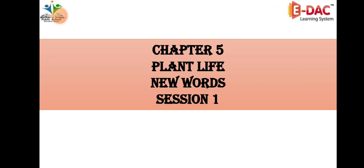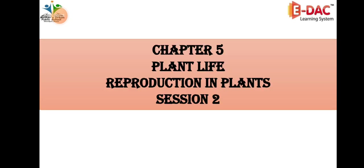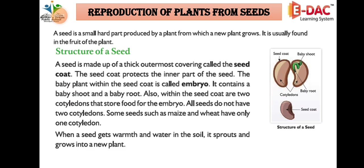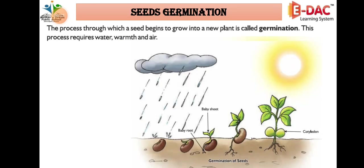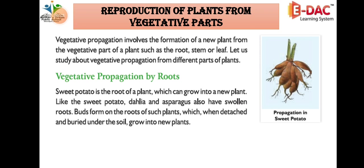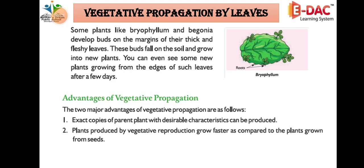A few days ago we started our 5th chapter, Plant Life. We studied new words, then in the second session we covered reproduction in plants from seeds — how seeds grow into plants. In the next lecture we covered reproduction in plants from the vegetative part: roots, stem, and leaves.